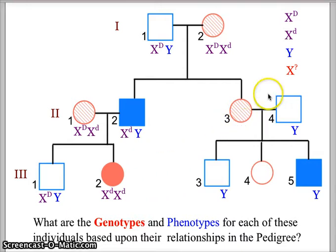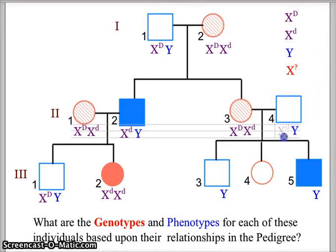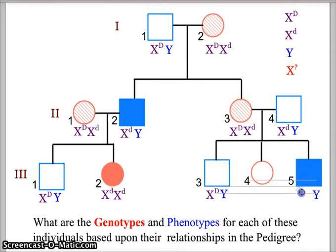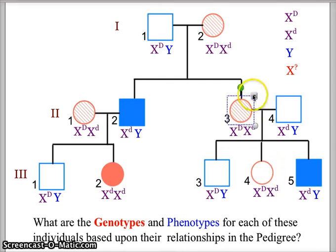In generation two, individual three, she is a carrier — X capital D, X lowercase d — and she marries a gentleman who does not have Duchenne, so he's going to be X capital D, Y. Their three children: the son who does not have it is X capital D, Y; the son who does have it is X lowercase d, Y; and the daughter is going to get the X capital D from her mom but the X lowercase d from her dad — because that's the only thing possible — so she is actually going to be a carrier.